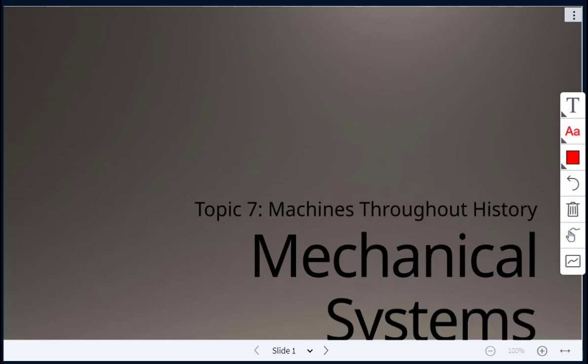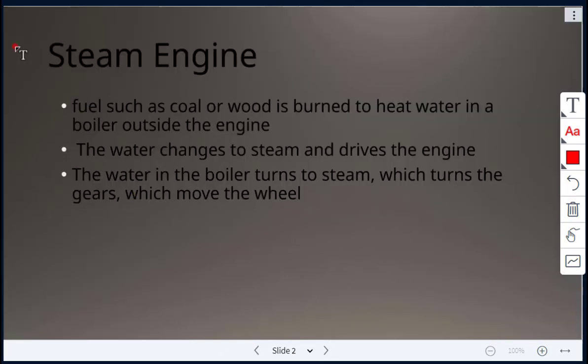Today's class we are looking at Topic 7, which is machines throughout history. We'll start by talking about steam engines. Fuel, such as coal or wood, is burned to heat water in a boiler outside the engine. The water will change to steam and will drive the engine. So the water in the boiler turns to steam, which will then turn the gears, which will then move the wheel.